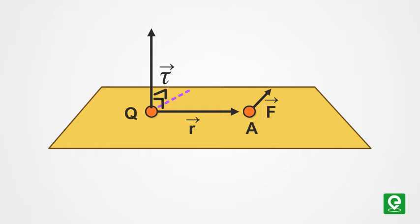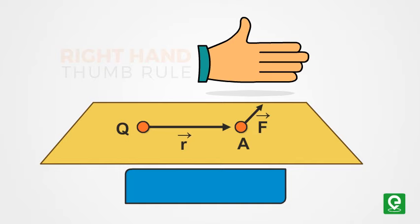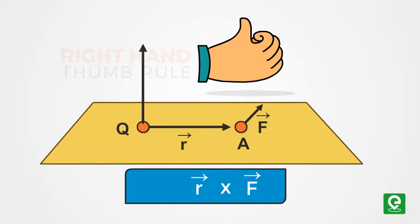The direction of torque is given by the right hand thumb rule. To apply the right hand rule, put the fingers of your right hand along the position vector and bend them towards the force vector. The direction of the thumb will give the direction of torque.